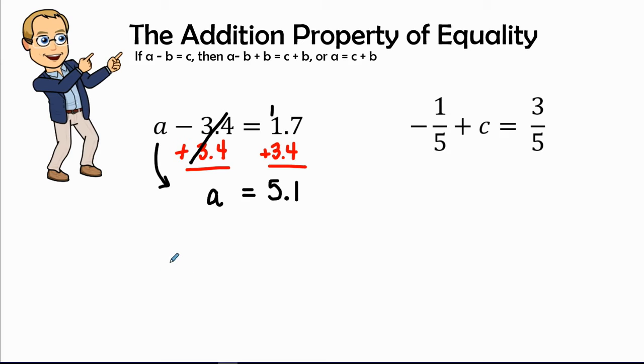Let's go and check our work. So wherever I see a variable a, I'm going to put 5.1. So 5.1 subtract or minus 3.4 is supposed to equal 1.7 or 1 and 7 tenths. So when we subtract, we see that 5 and 1 tenth minus 3 and 4 tenths is 1 and 7 tenths, and sure enough they check. We are double checked and we guarantee that we have a correct answer.